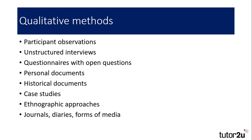Looking at qualitative methods, the methods that produce qualitative data are participant observations — whether covert or overt — and some non-participant observations, where people's actions, opinions, motivations and insights are recorded, transcribed and analysed. Unstructured interviews, with their flexible nature, allow for a broader range of responses, which are usually recorded by researchers, then transcribed and analysed. Questionnaires with open questions allow the respondent to expand upon their opinions, usually in written form, providing a range of qualitative responses for researchers to analyse.